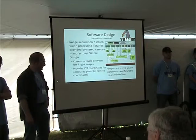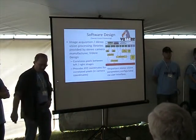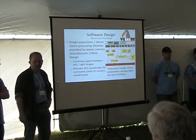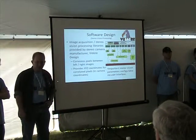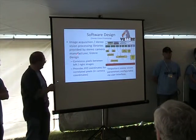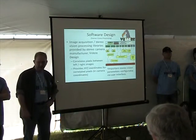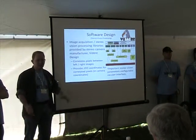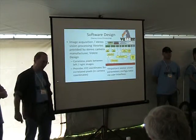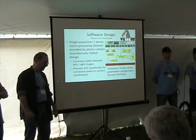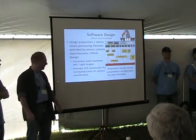We'll talk first about the vision processing. The first acquisition of images is done through a library supplied by the camera manufacturer, Ideas Design of California. That software correlates two images, correlates pixels in each image, and determines depth — XYZ information for each pixel.